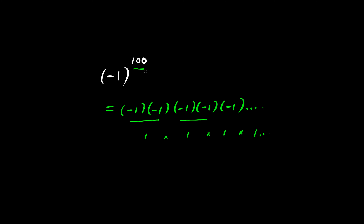And because there's an even number of negative 1's, the final answer must be positive. 1 times 1 times 1, taken 100 times, is simply 1.